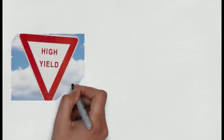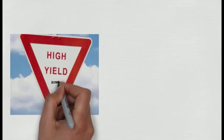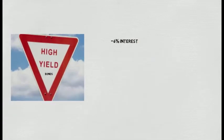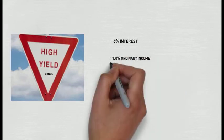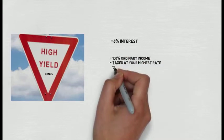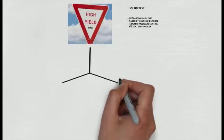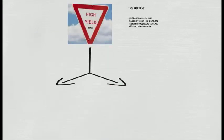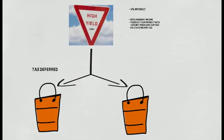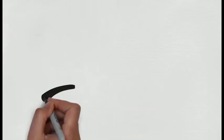A very simple example would be high yield bonds that are paying 6% interest and produce 100% ordinary income that can be taxed at your highest rate plus 3.8% plus 6% state income tax. These bonds should absolutely go into a tax-deferred account or a qualified account.